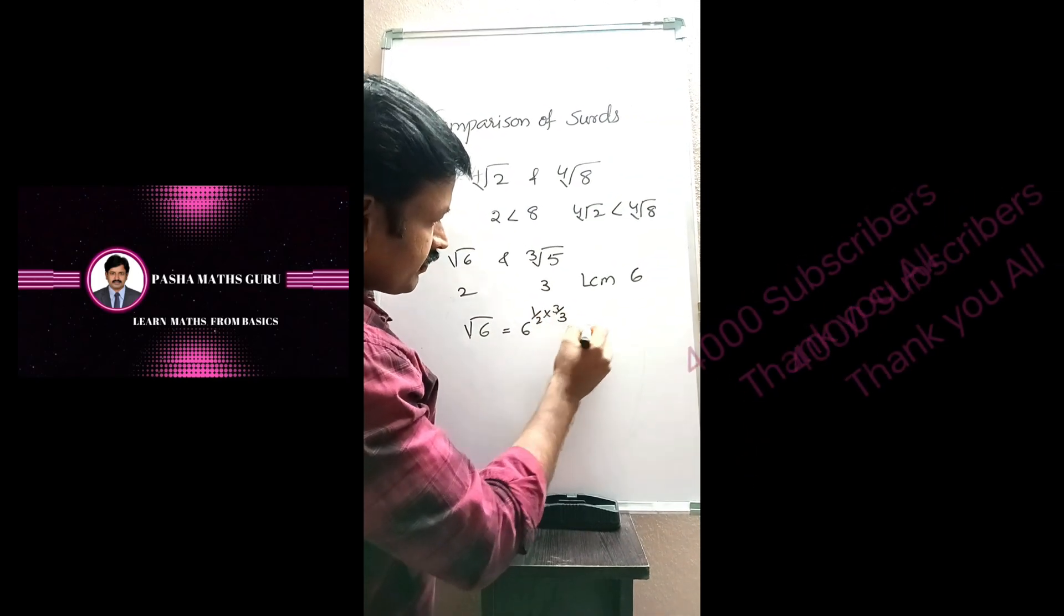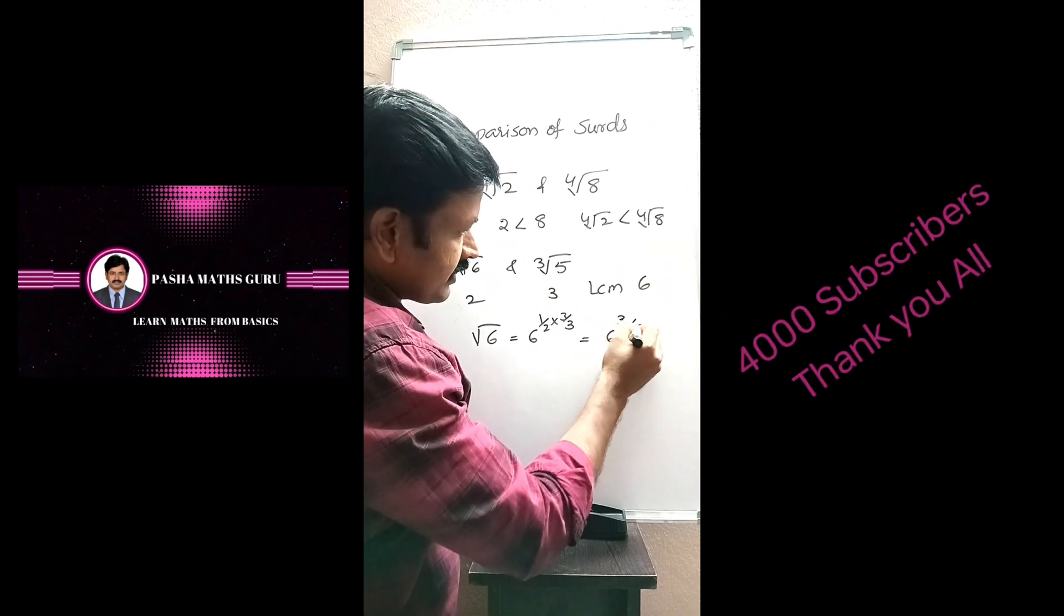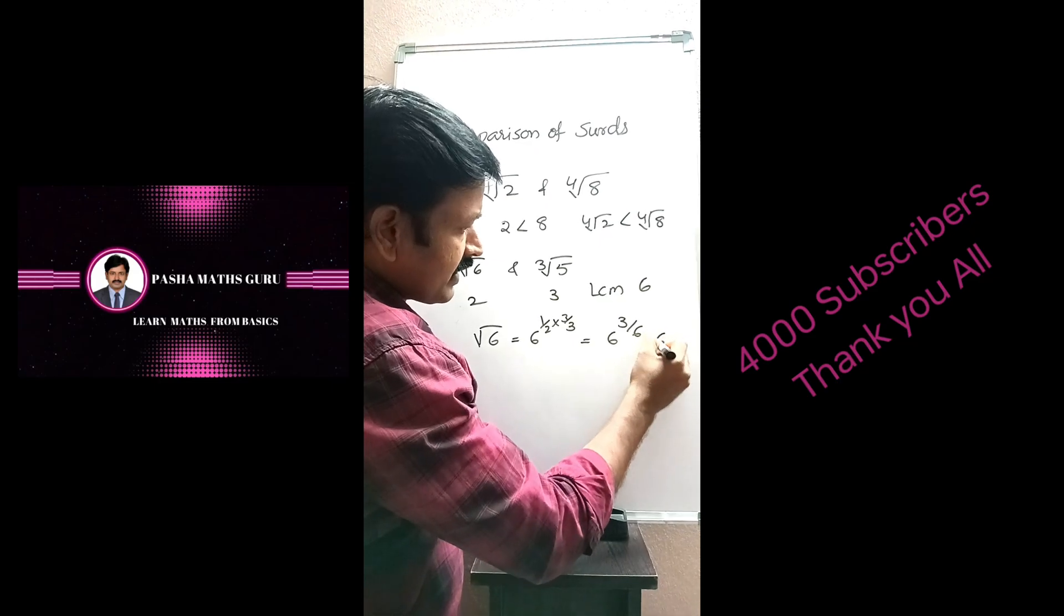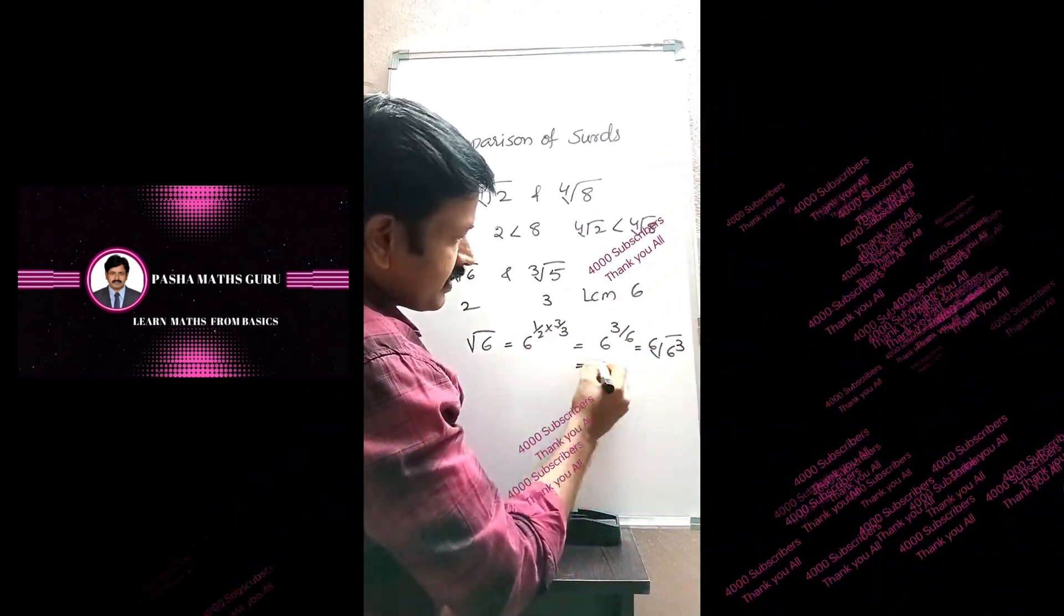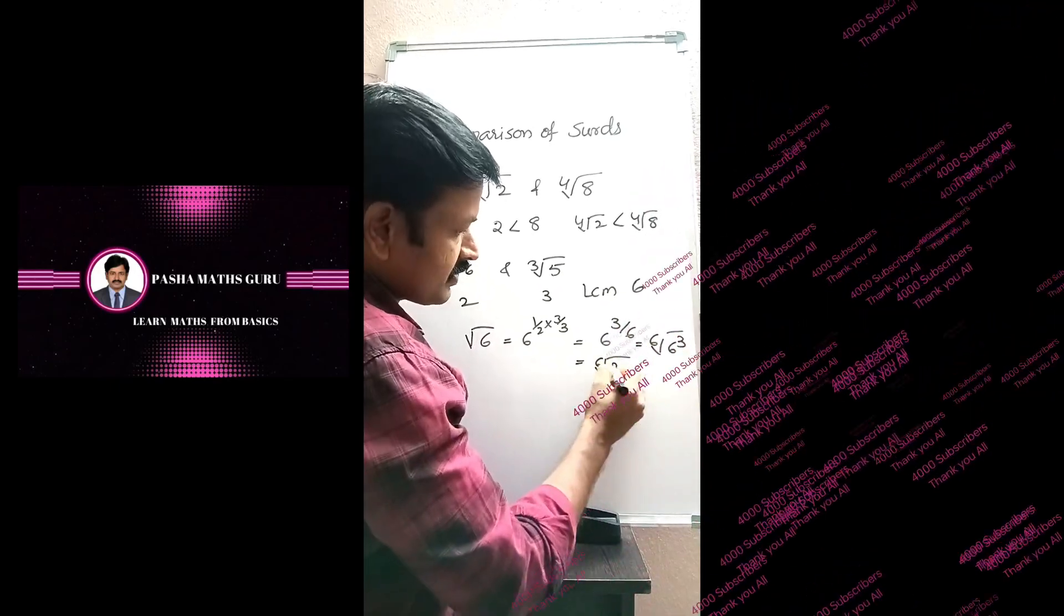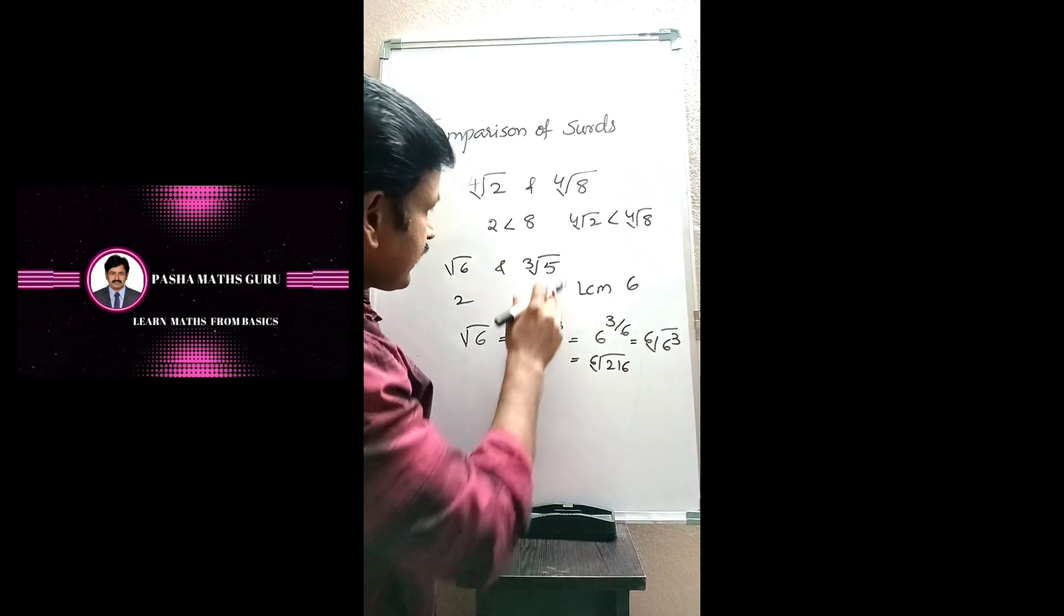Square root 6 is equal to 6 power 1 by 2 into 3 by 3, which is equal to 6 power 3 by 6. 6th root of 6 cube. As 6 cube is 216, 6th root 216.